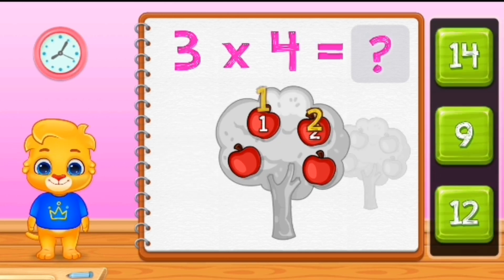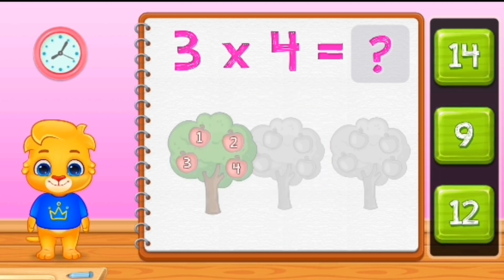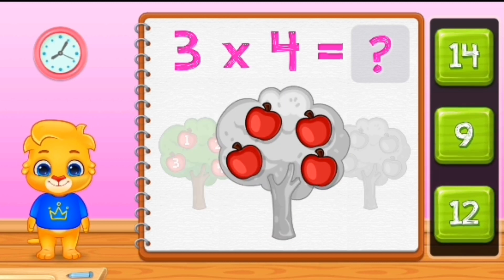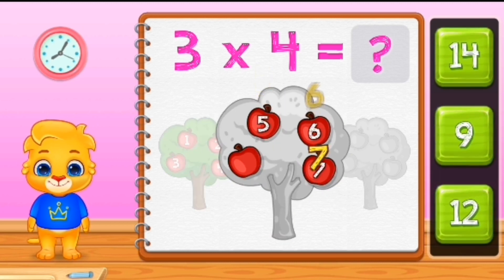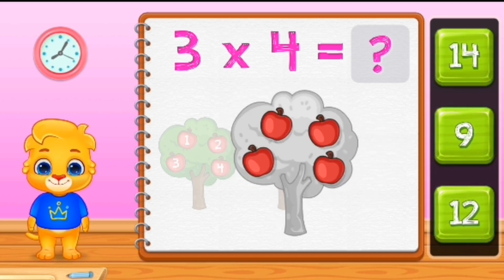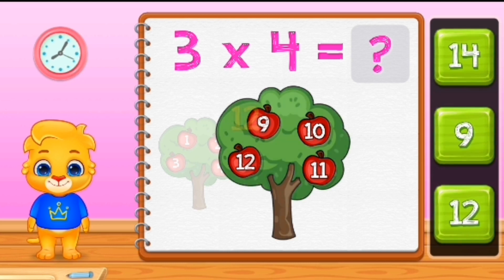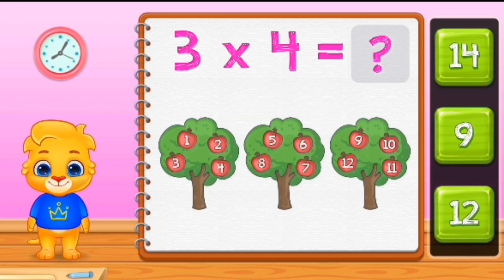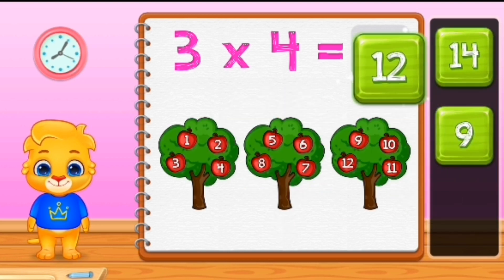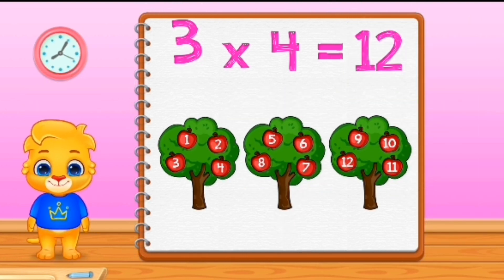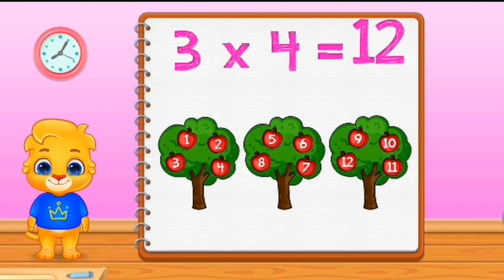One, two, three, four. Five, six, seven, eight. Nine, ten, eleven, twelve. Twelve. Three times four equals twelve.